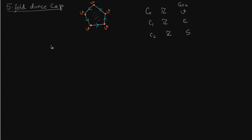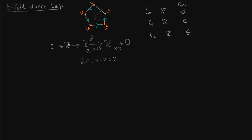So the chain complex is: 0 → C2 → C1 → C0 → 0. The last map is always the zero map. For delta1, the boundary of the edge E is V minus V, which gives 0. So delta1 is the zero map.